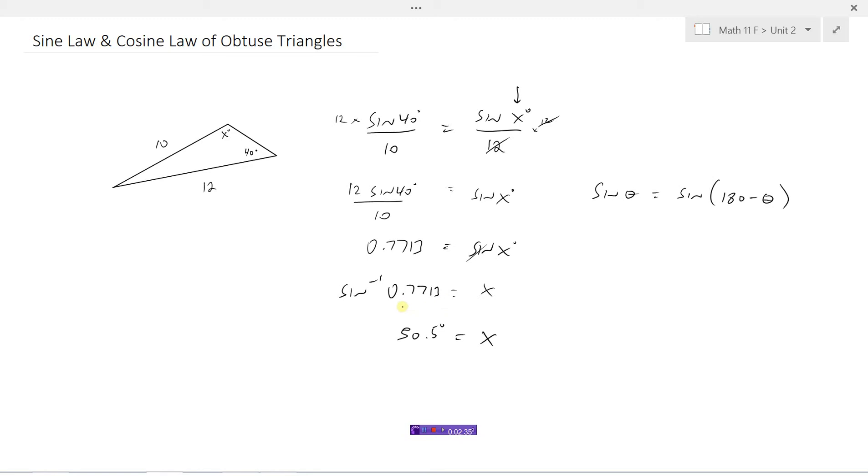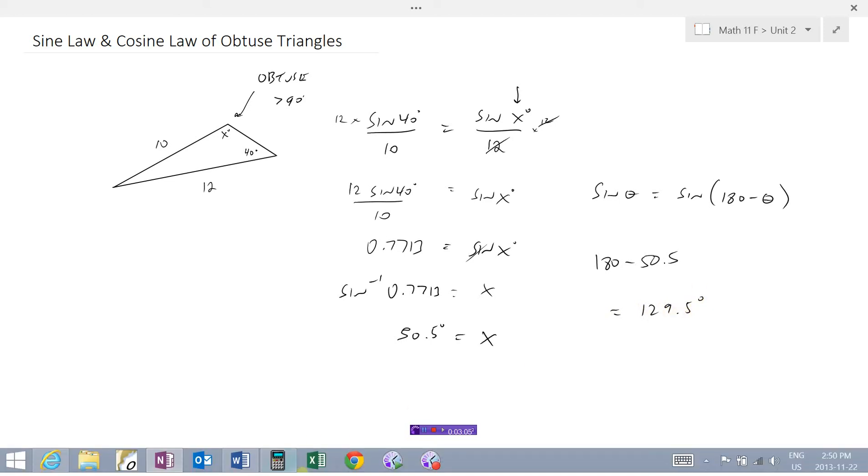When you put in the calculator the inverse sine of 0.7713, it doesn't know if you want the acute one or the obtuse one. But we'll know because we look at this triangle and see this angle is clearly obtuse, more than 90 degrees. So we don't want 50.5 degrees, we want 180 minus 50.5, which would be 129.5 degrees.